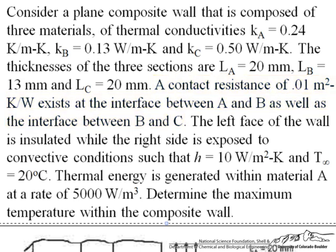The left face of the wall is insulated. The right side is exposed to convective conditions such that we're given h and T infinity which is 20 degrees C. Thermal energy is generated within material A at a rate of 5,000 watts per meter cubed. So we are asked to determine the maximum temperature within this composite wall.